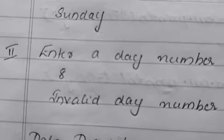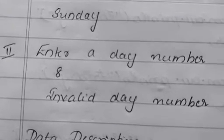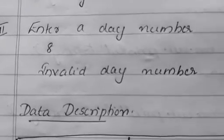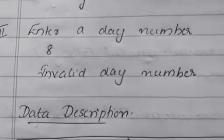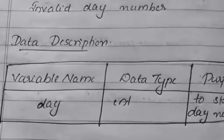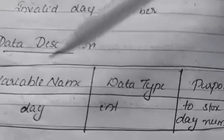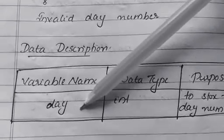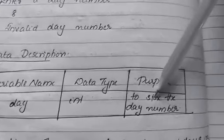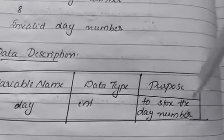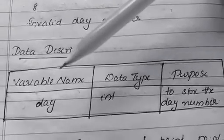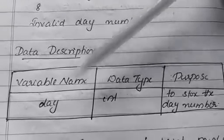After writing the output, you must write the variable description or data description table. A data description table consists of three things: the variable name, data type, and its purpose. The only variable used in this program is 'day', with data type int, and its purpose is to store the day number. Declare all variables used in your program in the data description table.